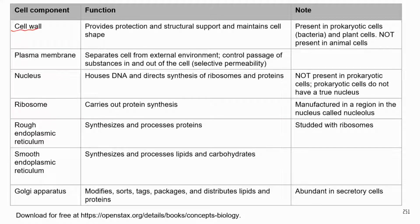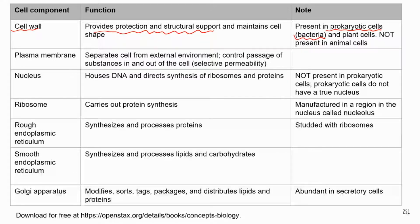Let's look at the cell wall first because it's the outermost structure of the cell. The cell wall is very rigid. It provides protection and structural support and also maintains the cell shape. A quick note: this particular structure is only present in prokaryotic cells, in bacteria cells — not all bacteria, some bacteria. Cell wall is also present in plant cells. If you look at elodea cells or onion cells, they all have cell walls.